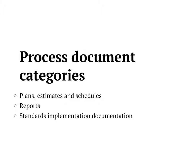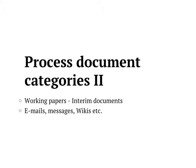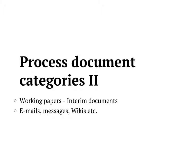Process document categories include plans, estimates and schedules, reports that you produce during the process of making the product, and standards implementation documentation. Also working papers - interim documents that you deliver during the development - emails, messages, wikis, meeting notes, etc. You can also divide into internal and external process documents.